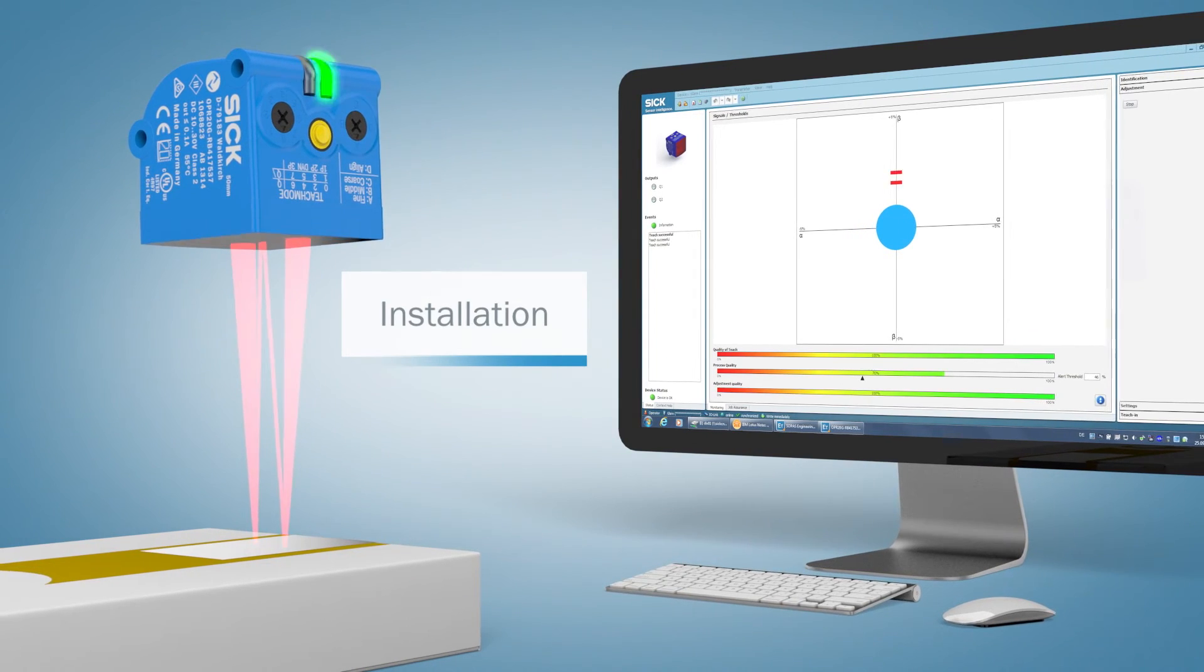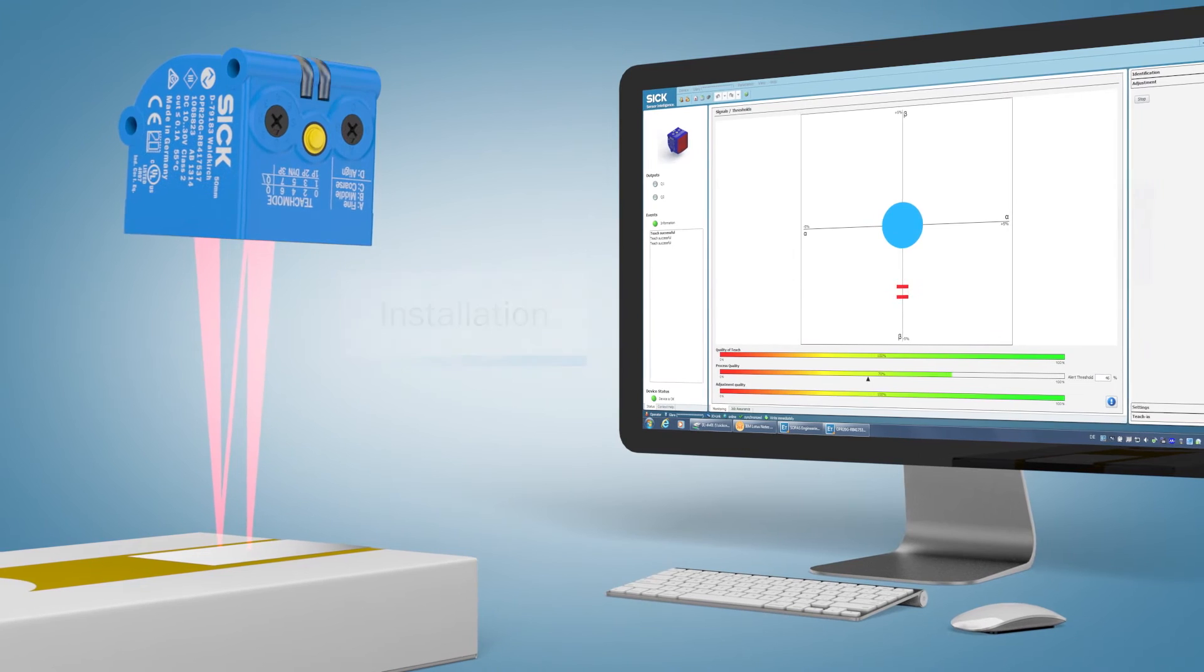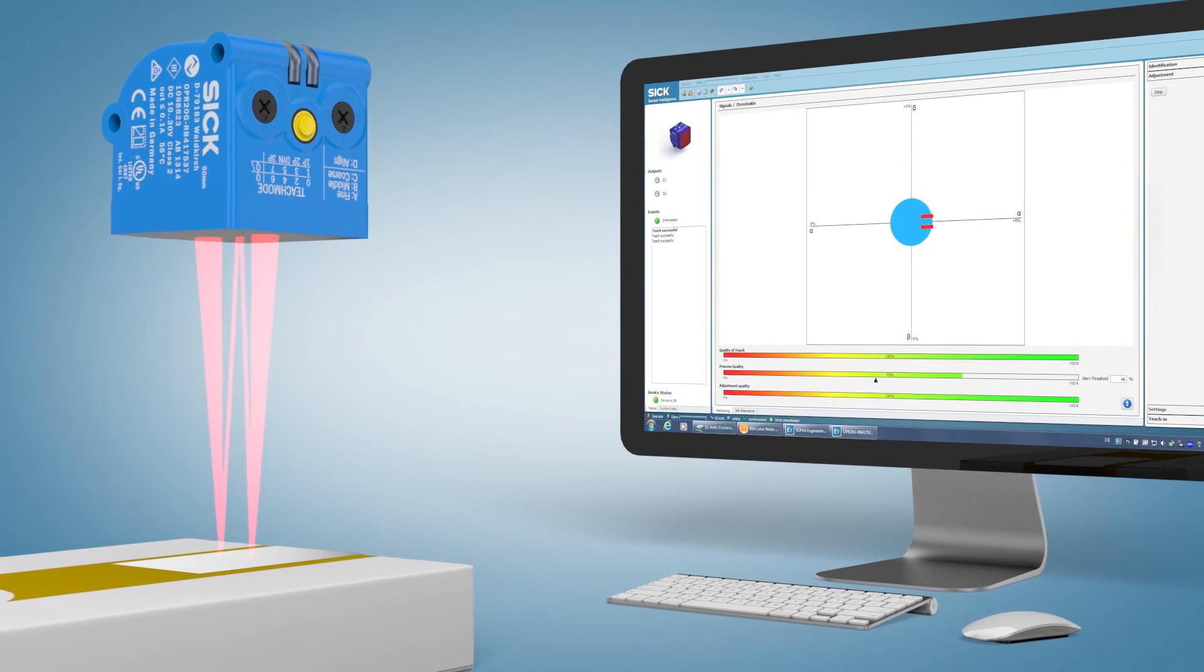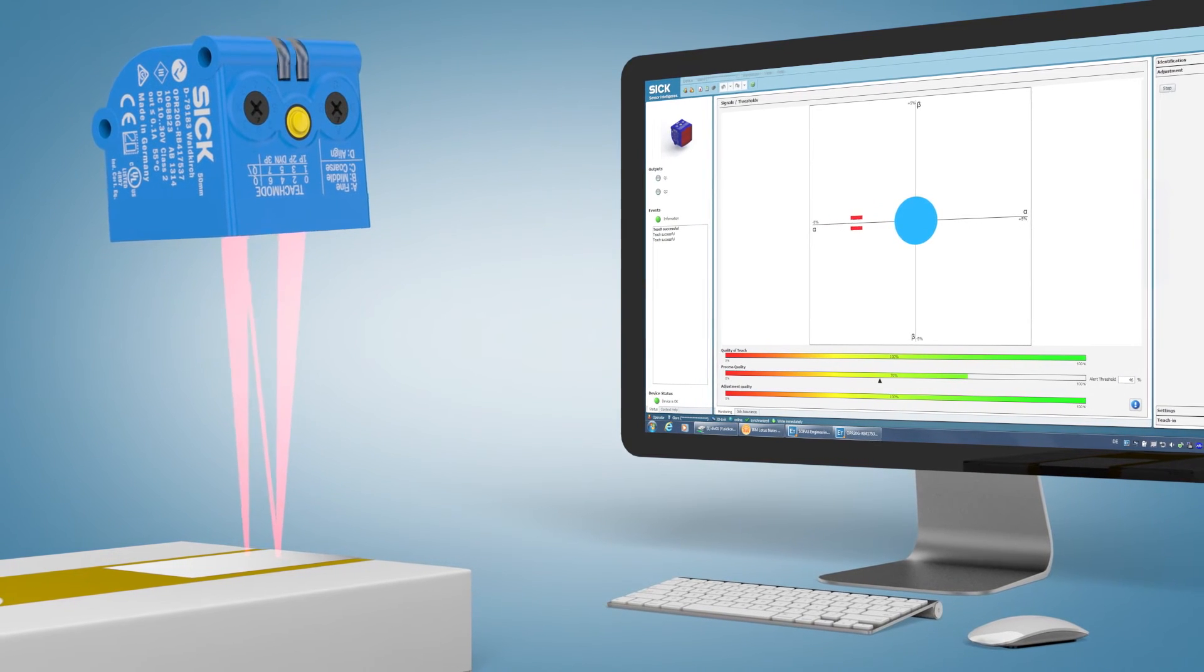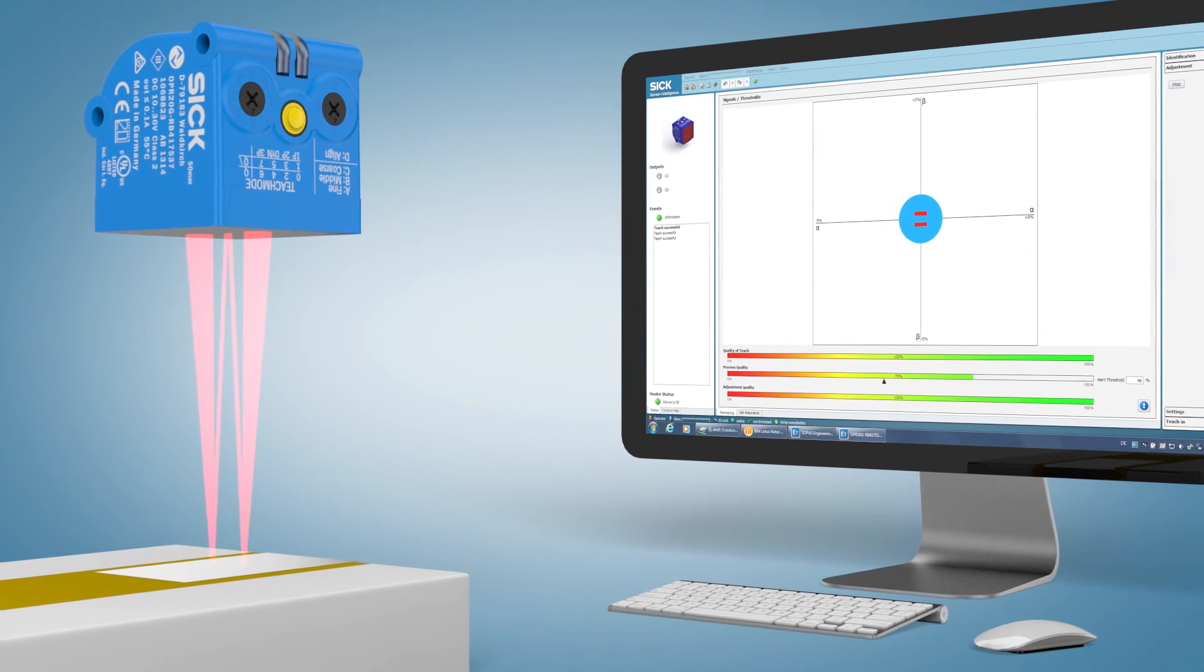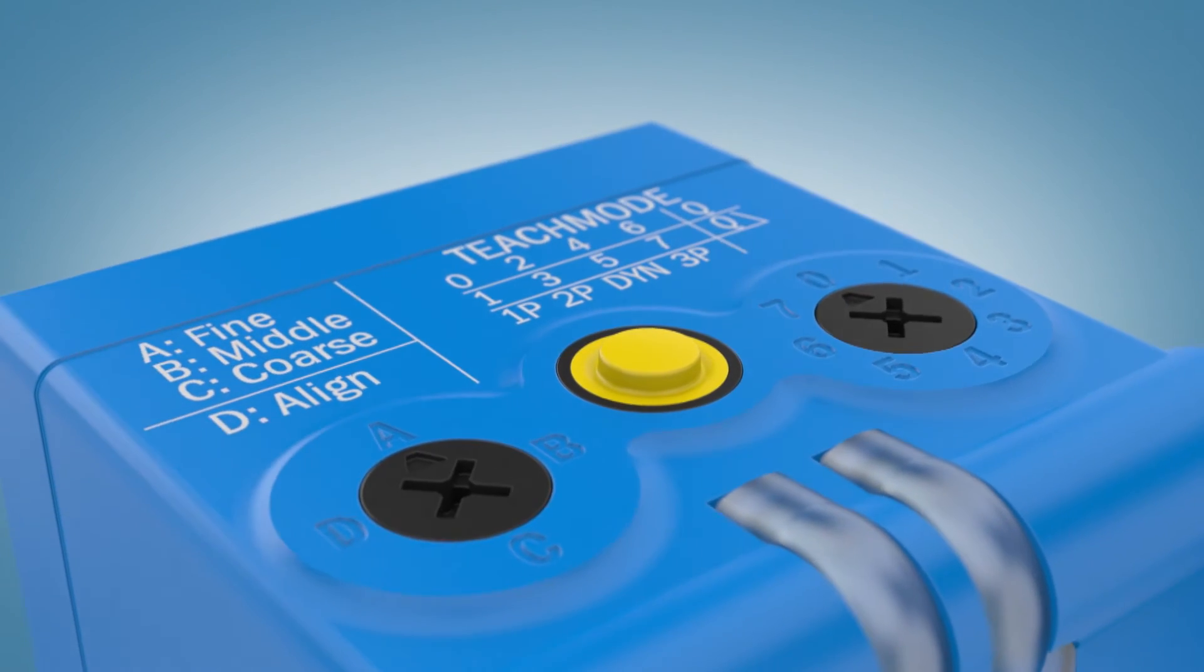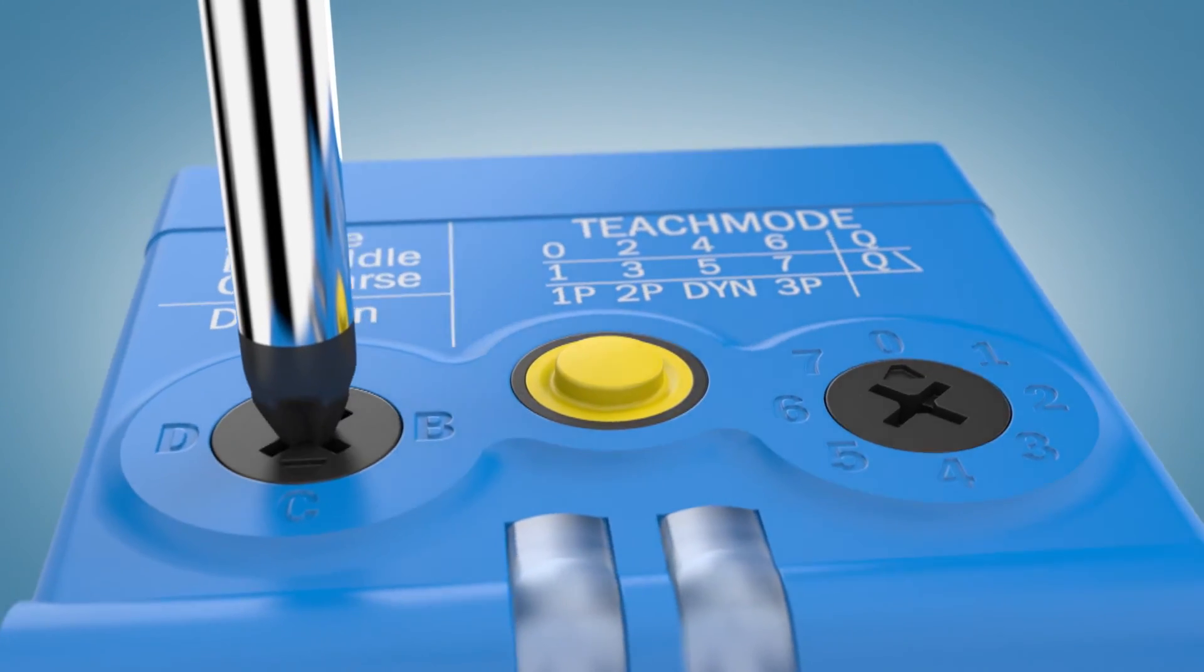The sensor's built-in alignment mode or the crosshairs displayed on the SOPAS configuration software can be used to support rapid, trouble-free installation on the machine. This saves time and money. With three sensitivity levels and four teach modes, the glare sensor can be quickly and easily adjusted to suit your individual application.